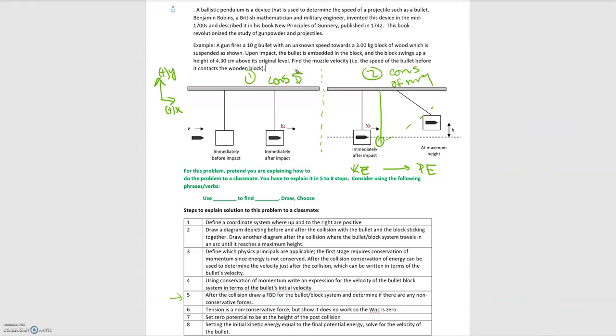Gravity is a conservative force, but the tension in the string attached to the block — making it rotate in an arc — is a non-conservative force. However, tension is perpendicular to the direction of motion, so there is no work done by non-conservative forces. We can take the kinetic energy at the start, find it transfers entirely into potential energy, and solve for the bullet's velocity in terms of the maximum height and the masses.